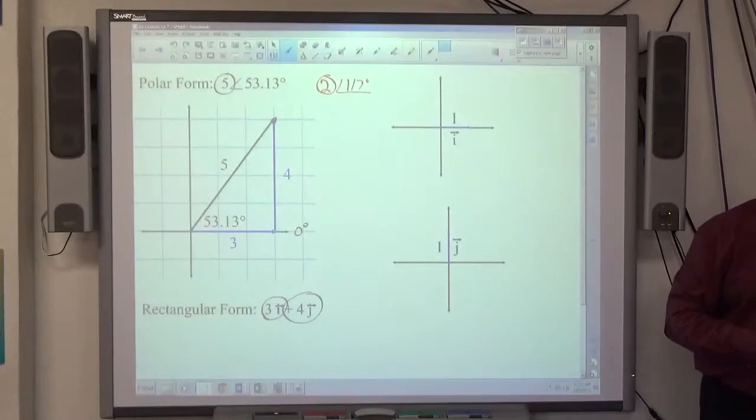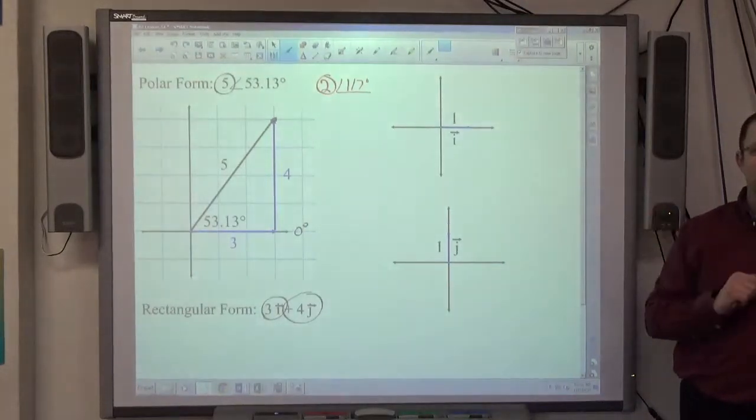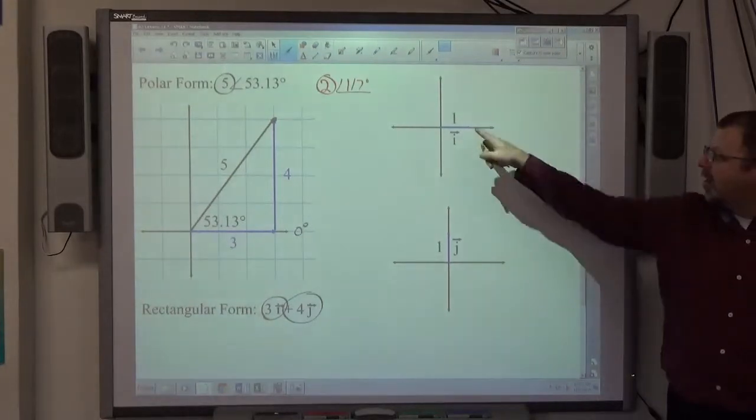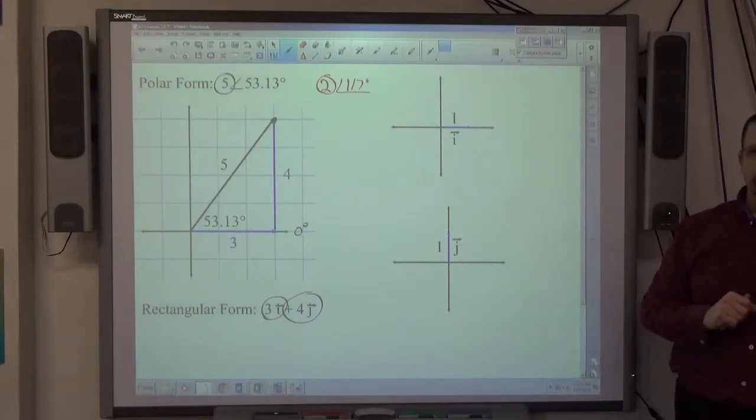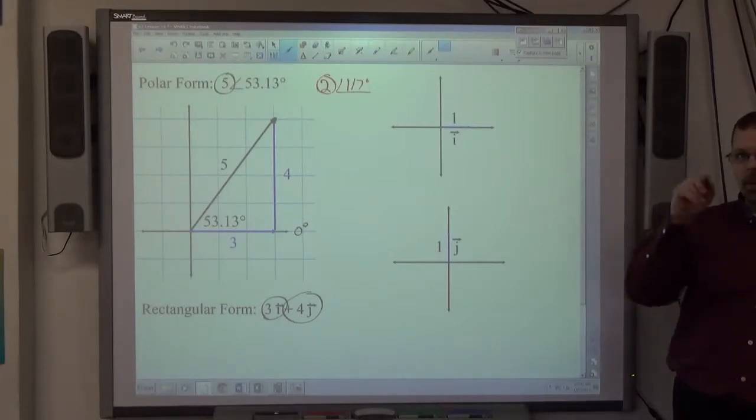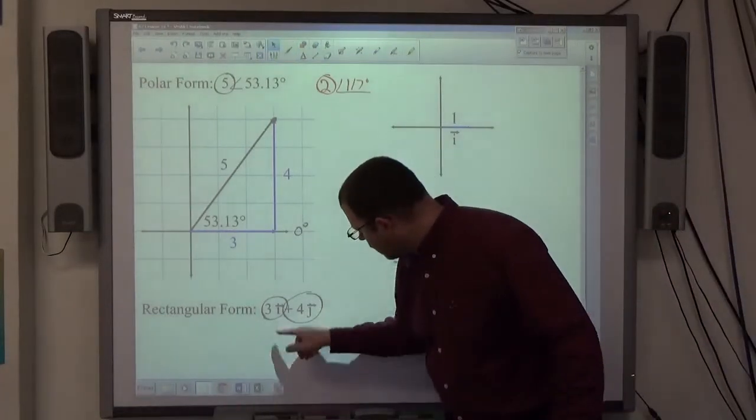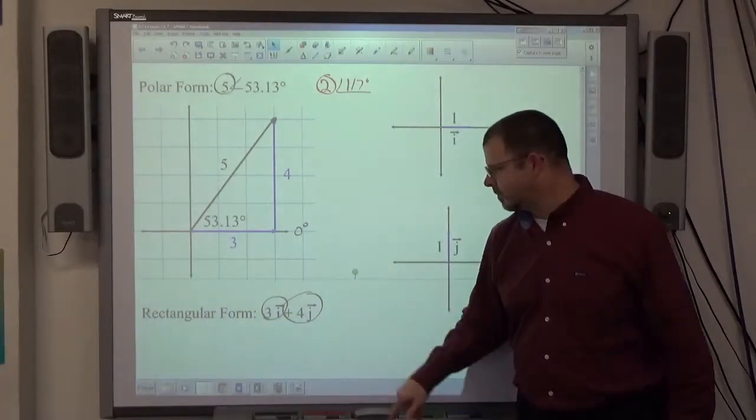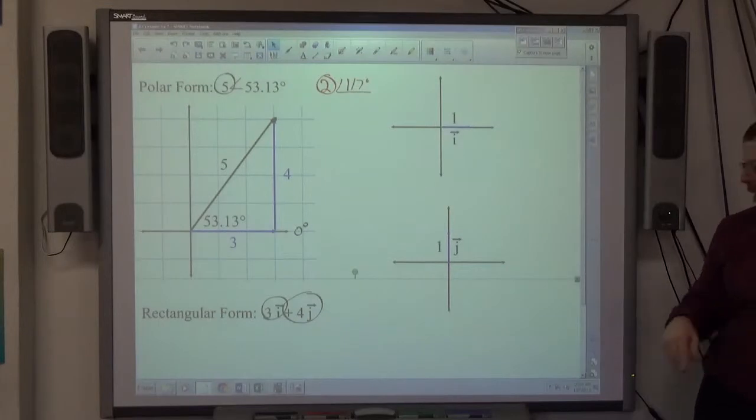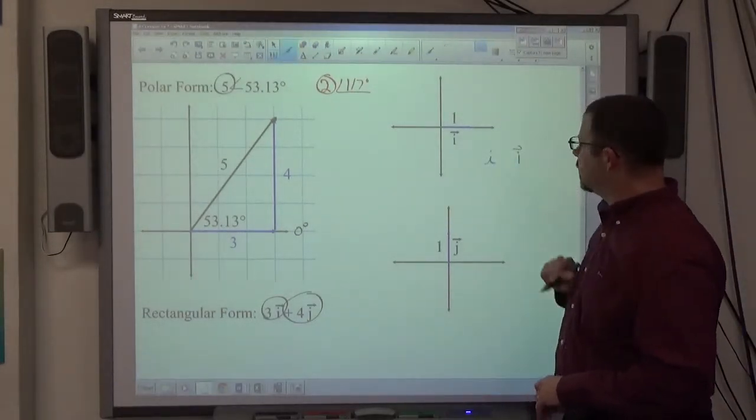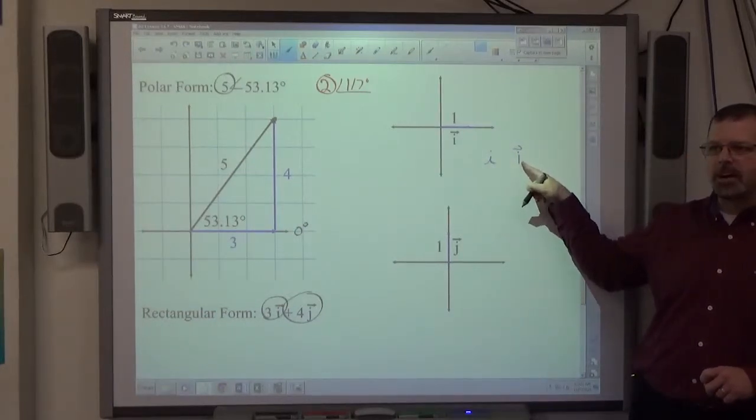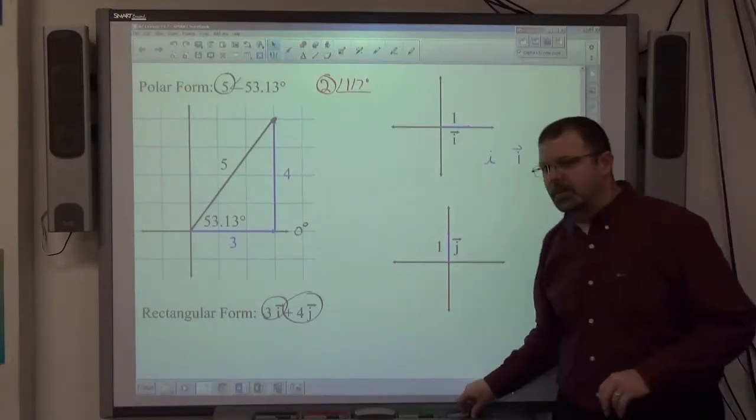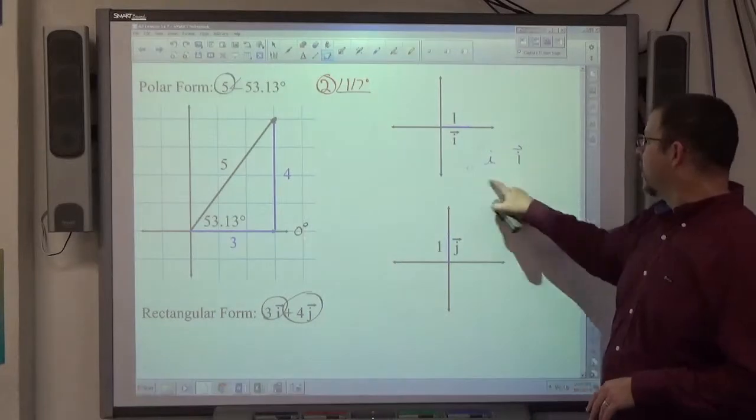Just recently we dealt with the letter i to represent imaginary numbers, right? This i is not the same as that i. I is a unit vector in the horizontal positive direction. J is a unit vector in the vertical positive direction. Every time you write a vector, you put the little arrow over it. That distinguishes the i imaginary from the i vector. Also, we make our imaginary little fancier i. The i vector, we make like this kind of i. That'll make a distinction in your brain between the two things. They're not the same.